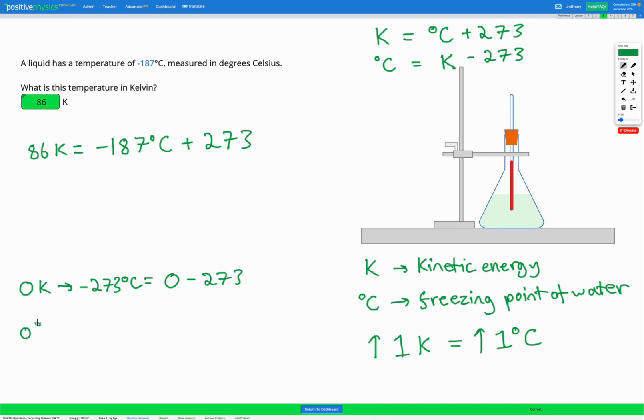On the other hand, if we have zero degrees C, we want to get that into Kelvin, we're going to do zero plus 273 to get 273 Kelvin.